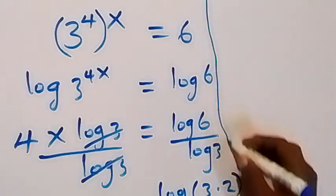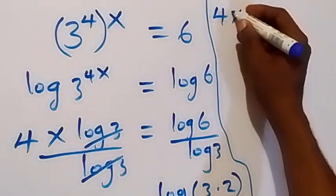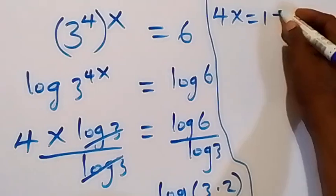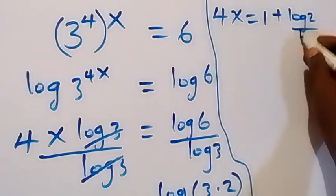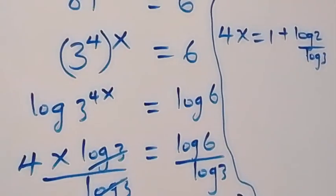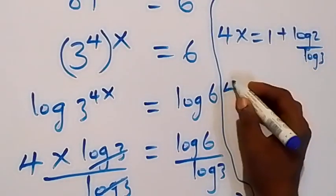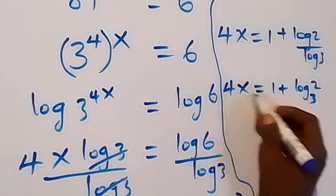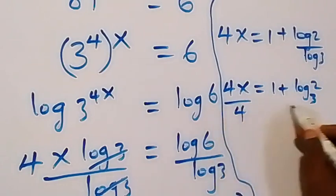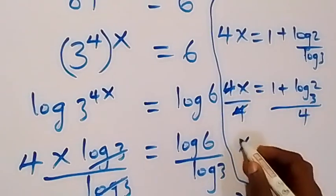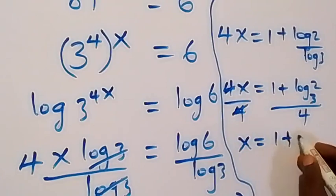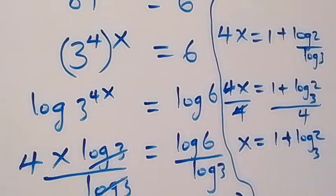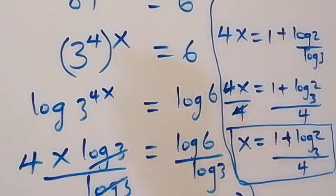So we have 4x equals 1 plus log 2 over log 3. By the change of base rule, we can write log 2 over log 3 as log base 3 of 2, so 4x equals 1 plus log base 3 of 2. Since we are finding x, divide both sides by 4 — the 4 cancels — and we are left with x equals (1 plus log base 3 of 2) divided by 4. That is the value of x for this problem. Thank you for watching, don't forget the steps.